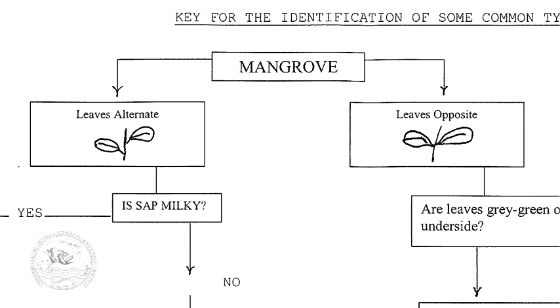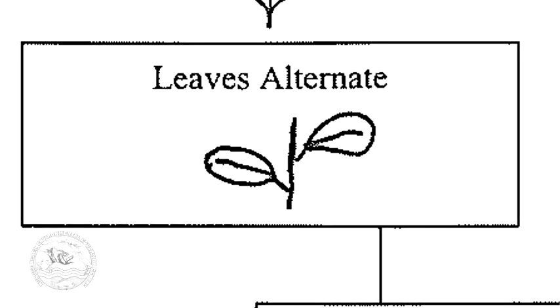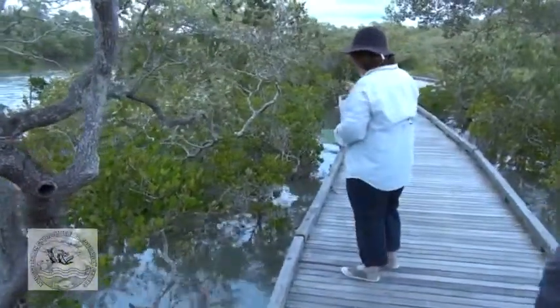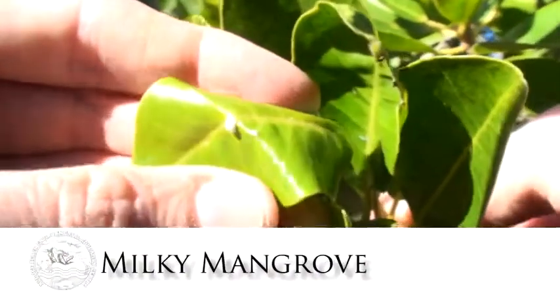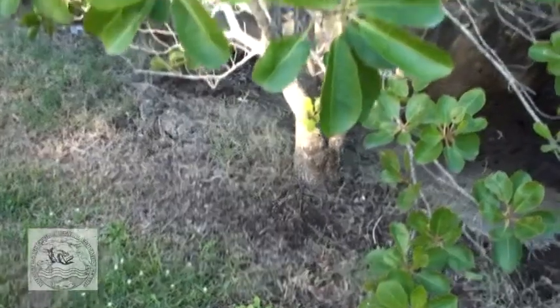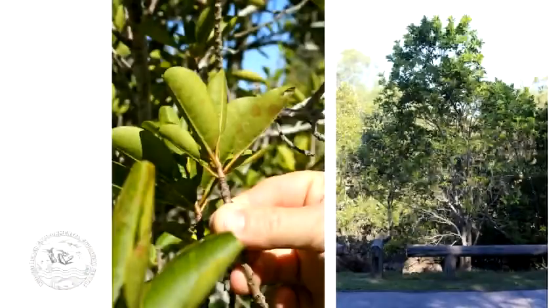Mangroves have alternate or opposite leaves. We'll first look at the ones which have alternate leaves — these are the ones that have leaves stepping on one side at each level as you go up the branch. The first tree on the key that has alternate leaves, we break or look at the sap. If it has white sap coming from the leaf, you will be able to call it a milky mangrove. This one is highly dangerous to humans because the sap will make you temporarily blind. Hence its other common name, the blind eye mangrove.